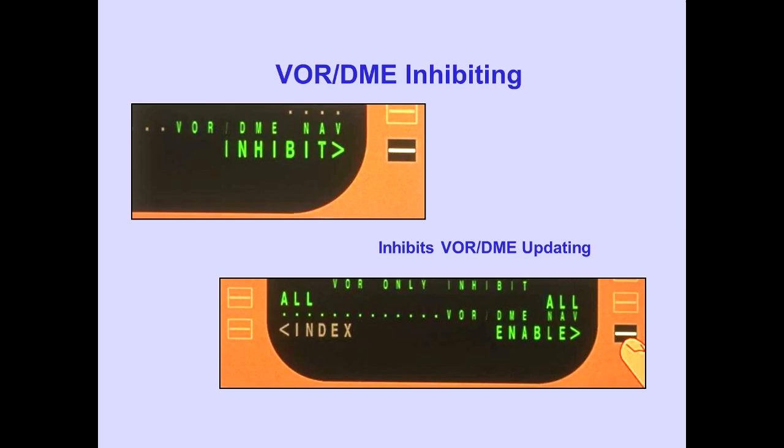With Inhibit displayed on the VOR DME Navigation Line, pushing the VOR DME Navigation Line Select key displays all on the left and right sides of the VOR Only Inhibit Line, and Enable on the VOR DME Navigation Line. The VOR DME Update Mode is inhibited. VOR stations can still be manually tuned, procedurally tuned, and route tuned.